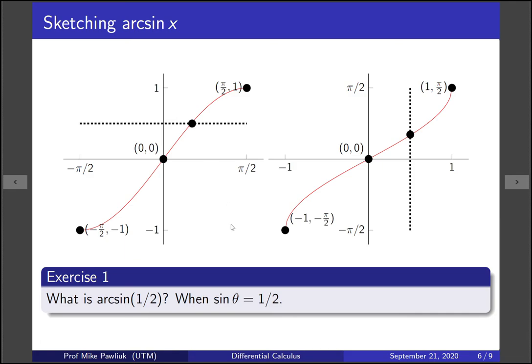So what angle gives me a sine of one half? Well this is one of our special angles. If you use theta equals pi over six you'll see that sine of pi over six is one half, so that tells us that arcsine of one half is pi over six. You exchange the rule of x and y.